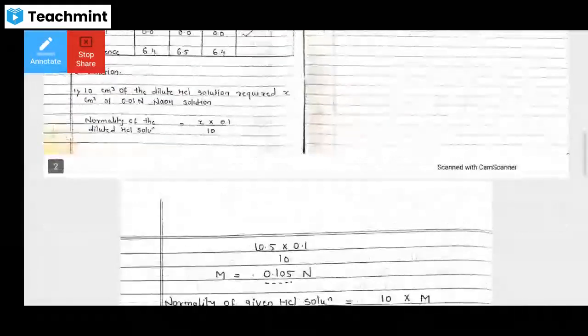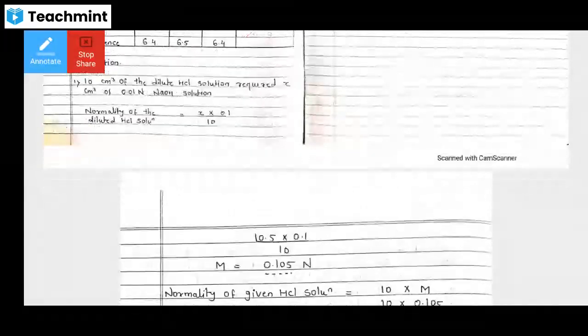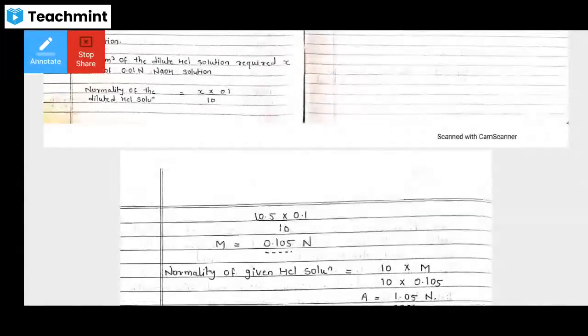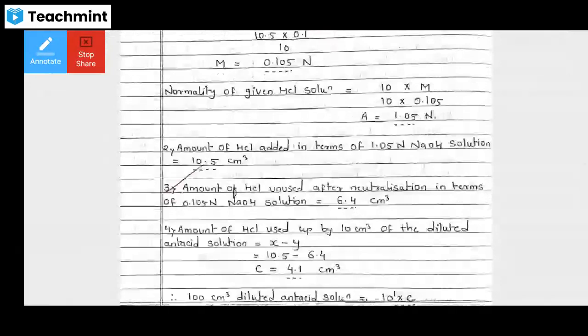In the calculation we know that 10 cm³ of the dilute HCl solution required X cm³ of 0.1 normal NaOH solution. The value of X is 10.5. Then 0.1 normality times 10.5 divided by 10 gives normality of dilute HCl solution M as 0.105 normal. Normality of given HCl solution: if you multiply by 10, you get 1.05 normal.